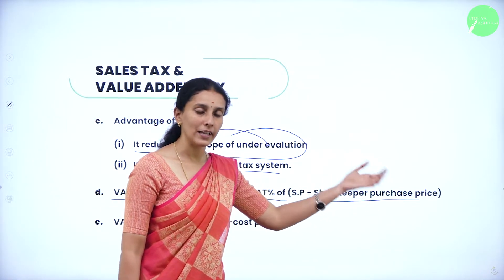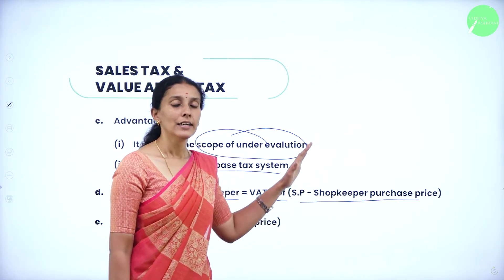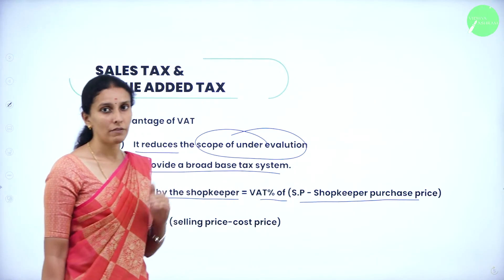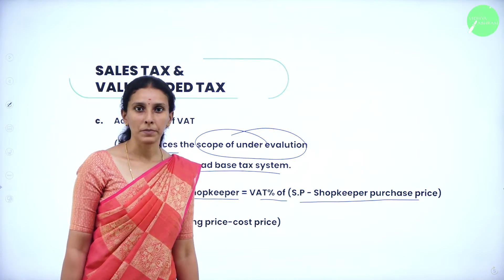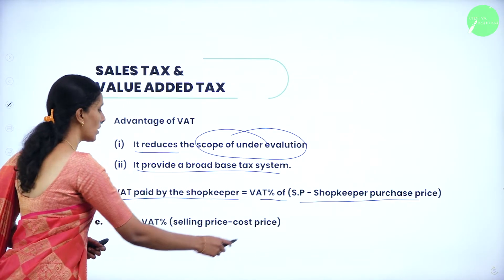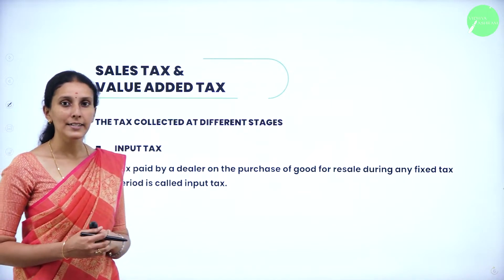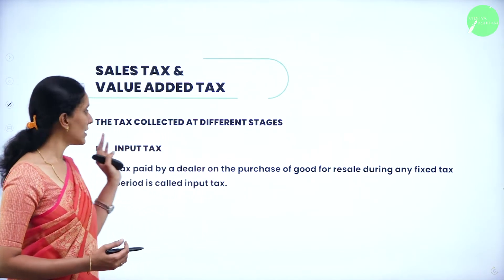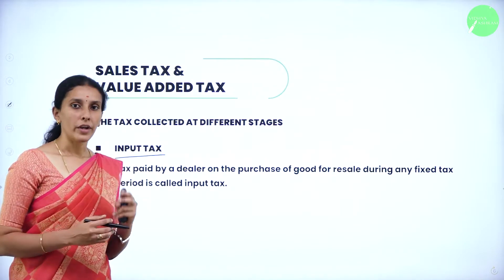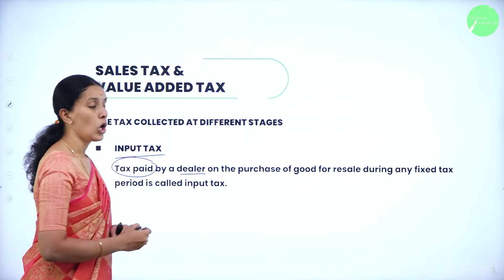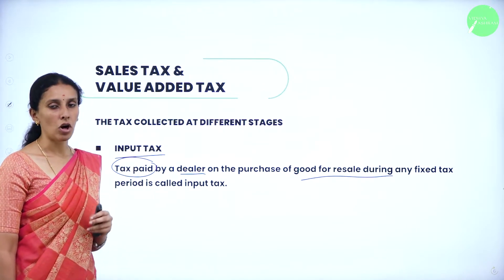The VAT paid by the shopkeeper is calculated by VAT percent of (selling price minus shopkeeper's purchase price). The shopkeeper purchases the goods for a certain amount, pays tax on that, and sells at a higher price. The selling price includes the VAT given by the customer. So VAT paid by the shopkeeper equals VAT% of (selling price minus cost price). Input tax is the tax paid by the dealer on the purchase of goods for resale during any fixed tax period.